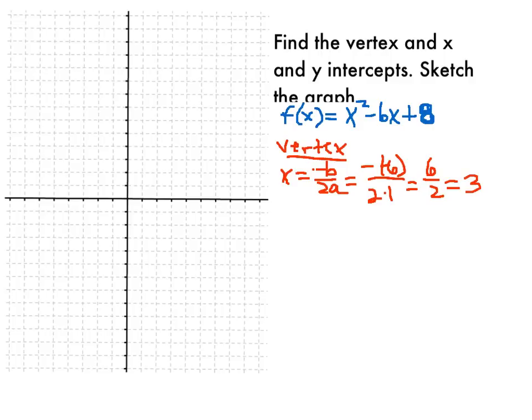So my vertex is going to have an x-coordinate of 3. My y-coordinate can be found by plugging 3 into my function, which in this case I'm going to get 9 minus 18 plus 8. So I'm plugging 3 into my function and I will get minus 1. So my vertex is going to be found at 3, minus 1.